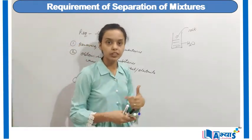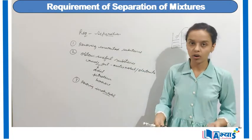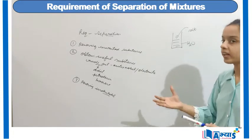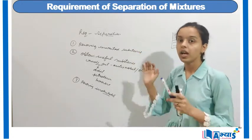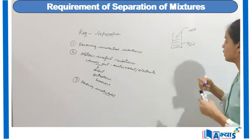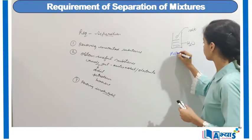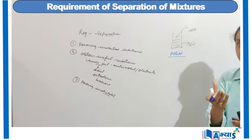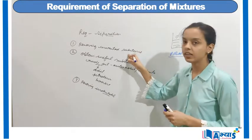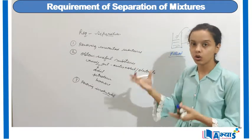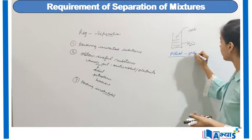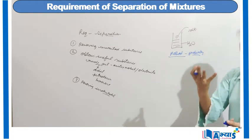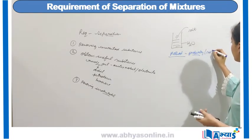Either we want the useful components, or we want to remove the undesirable or unwanted components. Now we will discuss how we need to do the separation — the method of separation. In the case of methods of separation, we have to find a property that one component follows and the other component does not. For example, the property of solubility.